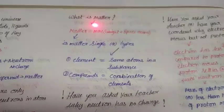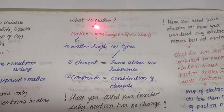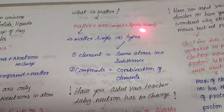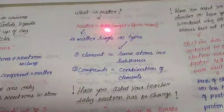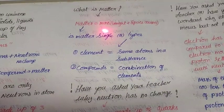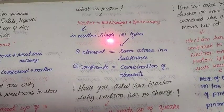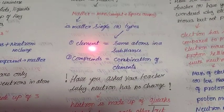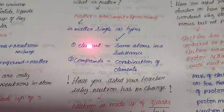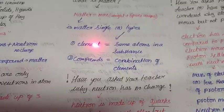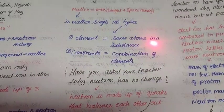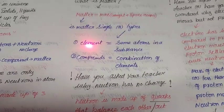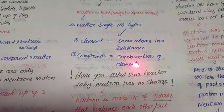What is matter? Matter means mass, that is weight and space occupies. I have so much matter, do you want to listen? I am joking. Matter is a matter. Do you mean matter is single or it has types? It is two types: element and compound. Think again, what is element? Same atoms in a substance are called elements. Combination of elements called compounds.